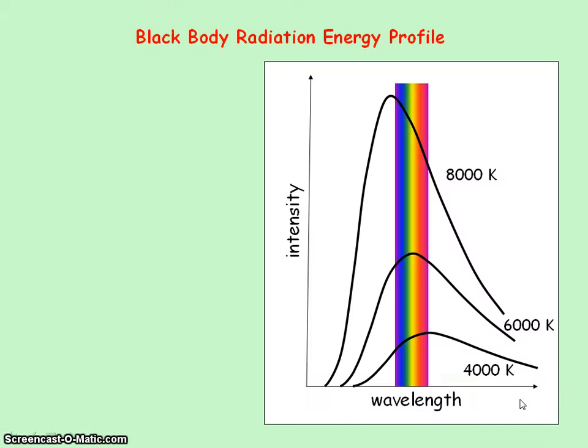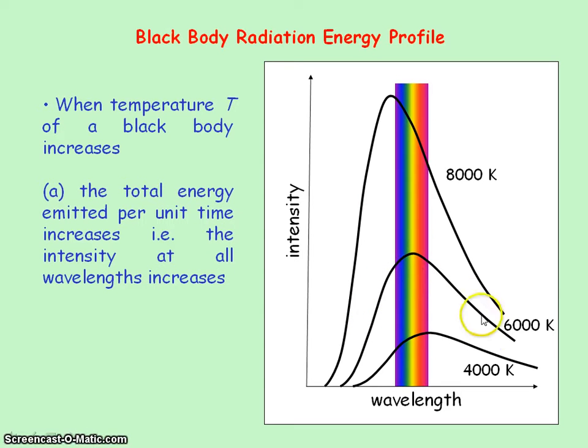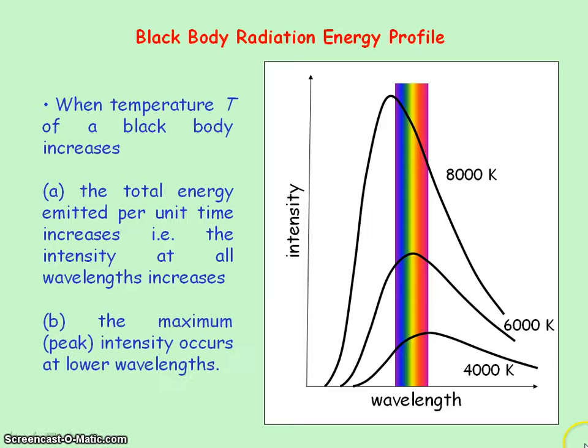This curve shows the intensity of each wavelength that is emitted from a black body at a given temperature. And what we can see is as the temperature of the black body increases, the intensity at all wavelengths increases. So the total energy emitted per unit time, or the total power radiated, increases. And we also see that the maximum intensity, or where the peak occurs, is at lower wavelengths.